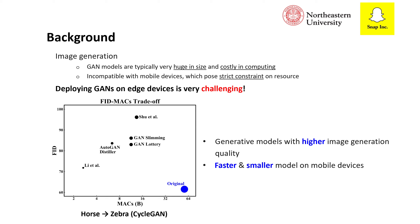As shown on the left figure, previous methods for GAN compression typically compress the models by sacrificing image quality. Our goal here is to obtain a generated model with higher image quality and enable a faster and smaller model on mobile devices.